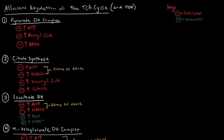The pyruvate dehydrogenase complex has 3 different allosteric inhibitors. The first one is lots of ATP — if there's lots of ATP around, that's going to inhibit the pyruvate dehydrogenase complex. High ATP indicates a high energy state. The TCA cycle and the pyruvate dehydrogenase complex make acetyl-CoA, which produces NADHs and FADH2s that yield ATP through the electron transport chain. So if we already have lots of energy, we don't need to create more. It makes sense that ATP will inhibit the pyruvate dehydrogenase complex and therefore the TCA cycle.